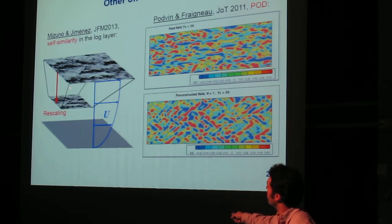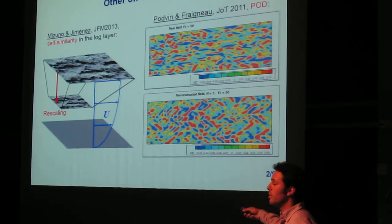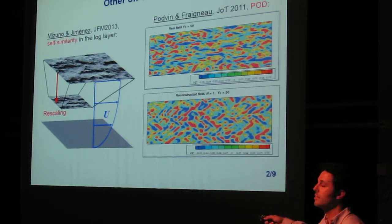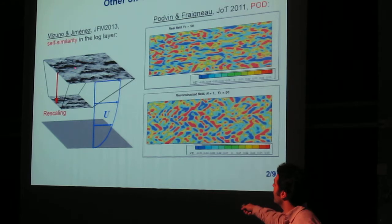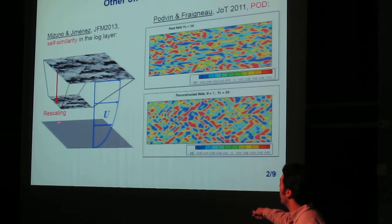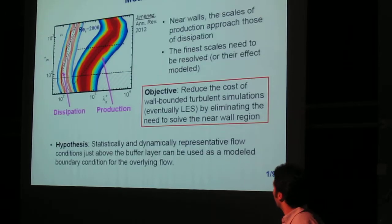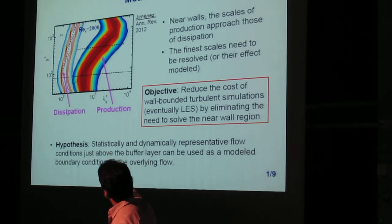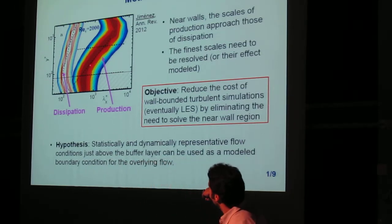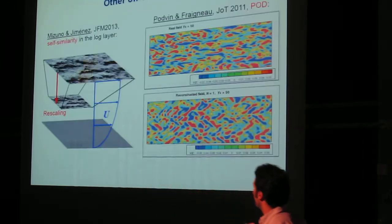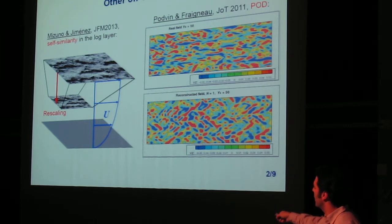The other one would generate boundary conditions dynamically from the simulation as it is going, by rescaling the flow above to a smaller size at some plane below, imposing the scaling laws that you get across the log layer. There's this linear scaling of the energy-carrying scales as you go across the log layer.